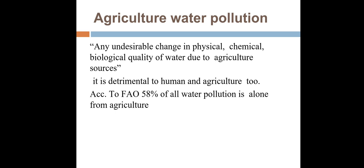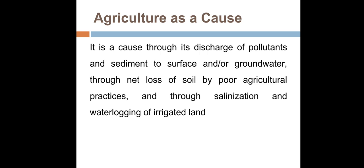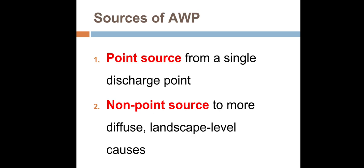According to the Food and Agriculture Organization, 58% of all water pollution is from agriculture alone. The causes include discharge of pollutants and sediment to surface and groundwater, net loss of soil by poor agriculture practices, and salinization and waterlogging of irrigated land.